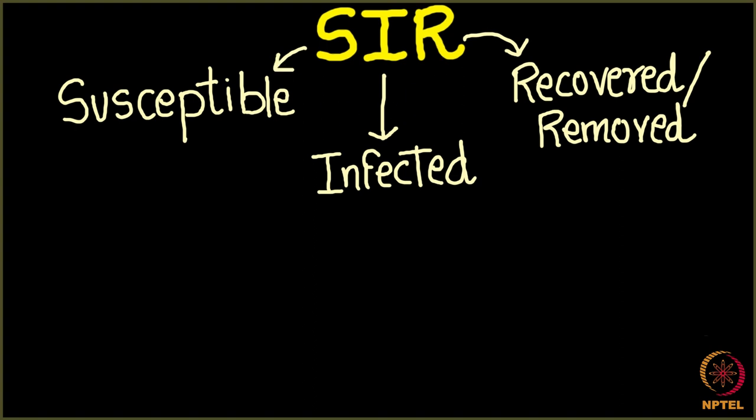In our next lecture we will see how can we simulate this model on an actual network. We are going to do that. So a node can here exist in three states as we saw and exactly one state at a time. You can't be susceptible and infected at the same time and infected and recovered both at the same time. You can be only in one phase at one time.